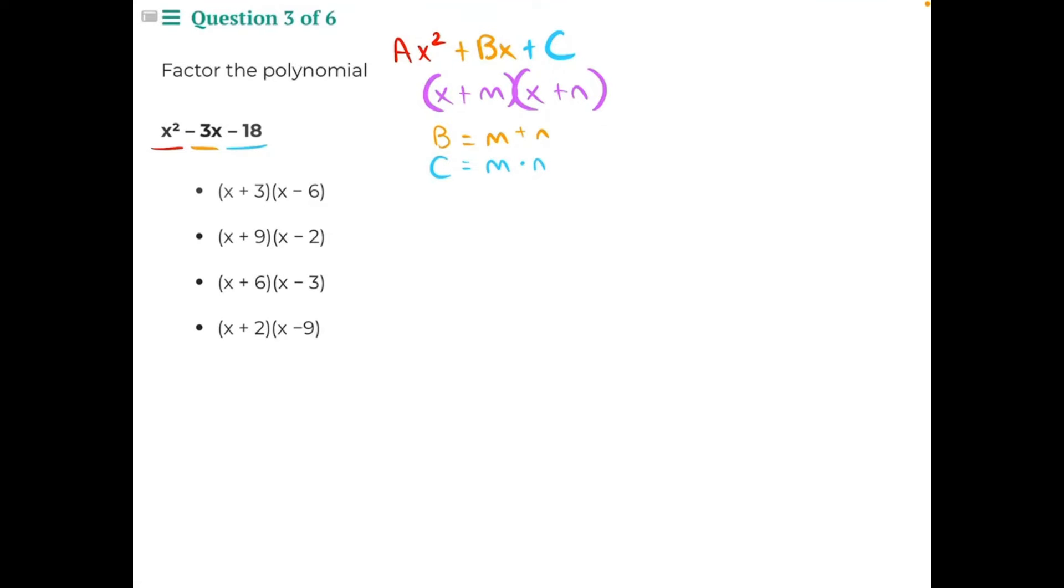Factor the polynomial x squared minus 3x minus 18. In order to factor this polynomial into two sets of binomials, we're going to need to start by looking at our c value, negative 18.